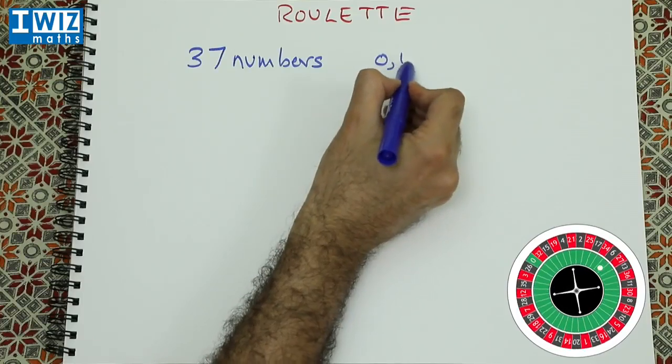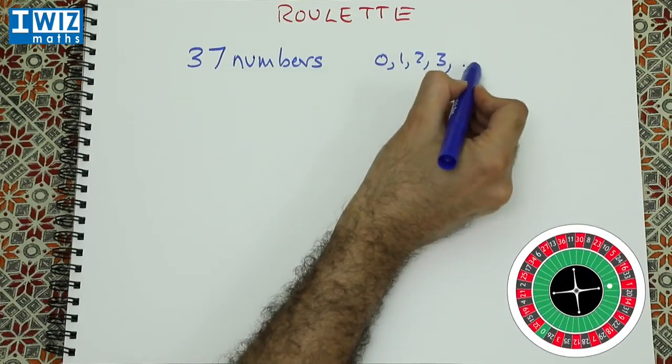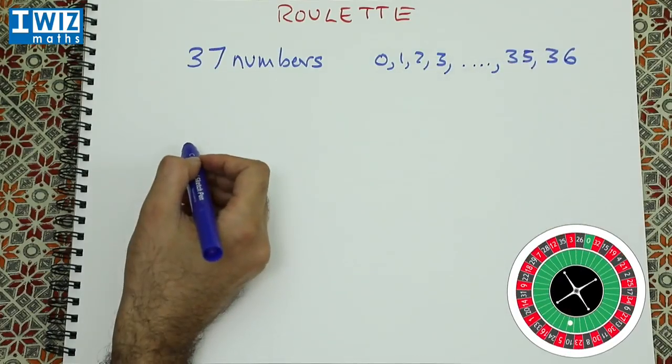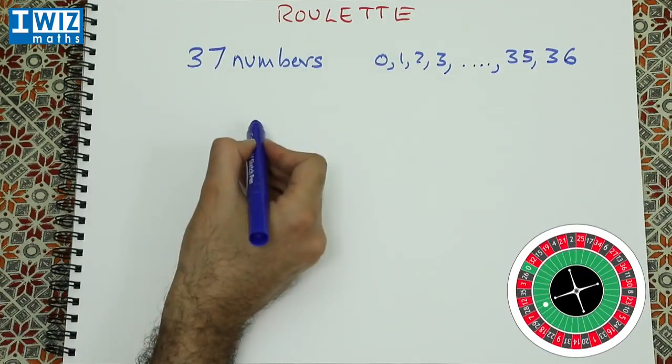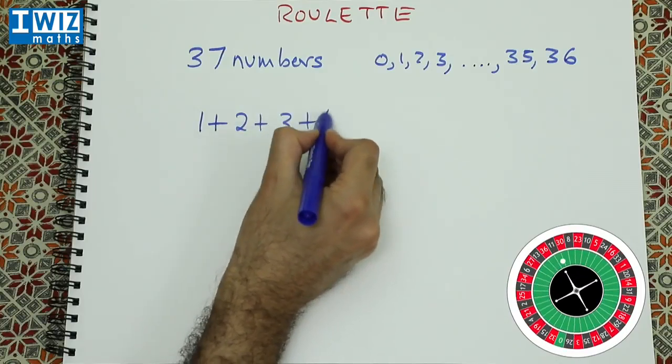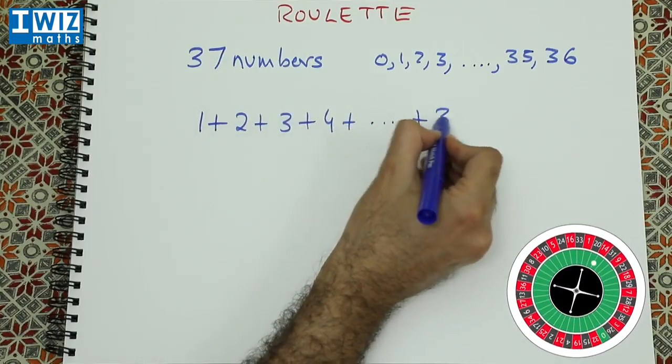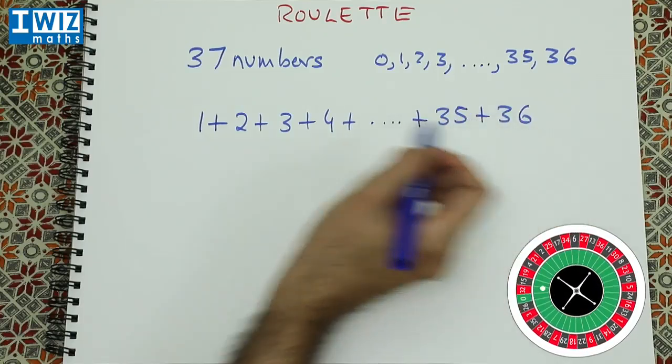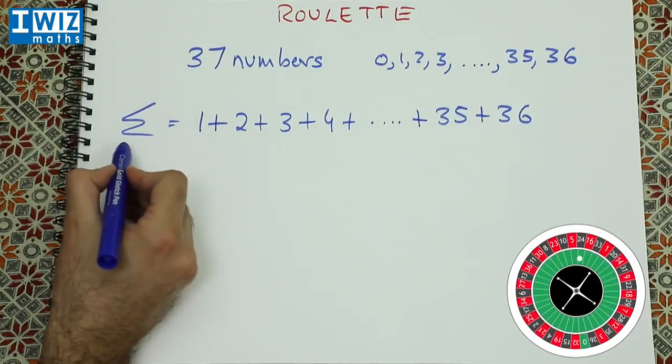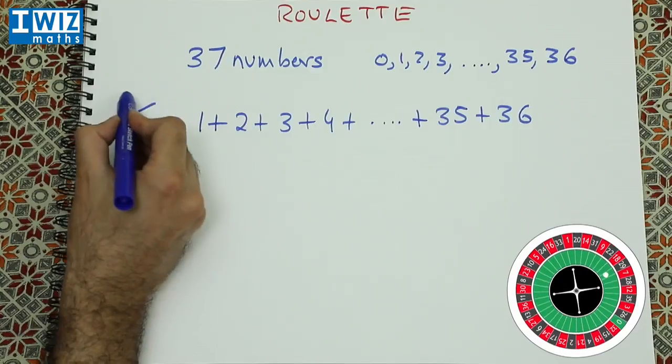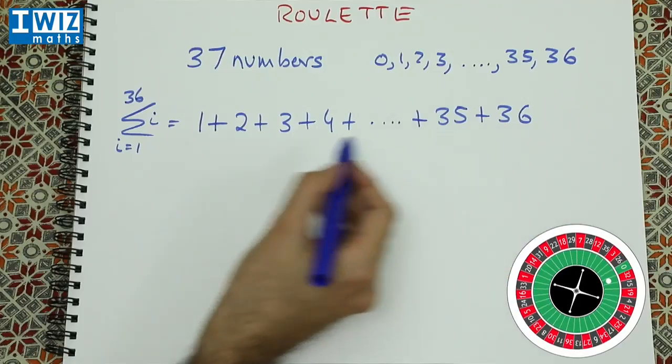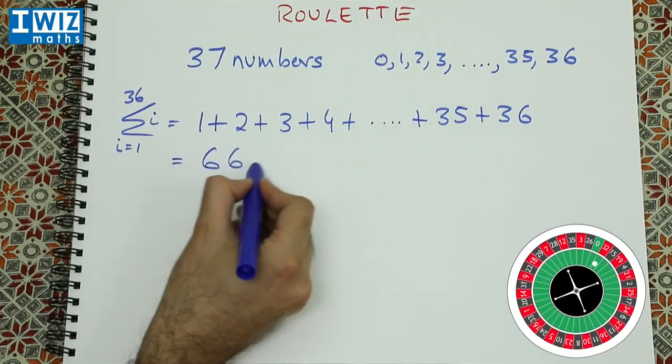The numbers are 0, 1, 2, 3, all the way up to 36. So if you add up all the numbers, let's keep 0 out of the picture. So we add up all the numbers: 1 plus 2 plus 3 plus 4 all the way up to 35 plus 36, which formally would be written as the summation from i equals 1 to 36 of i. And if you perform that computation, we get 666.